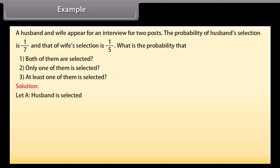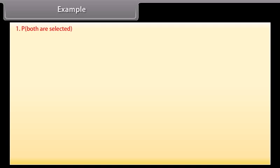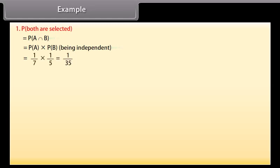Solution: Let event A be husband is selected, so P(A) = 1/7, and event B be wife is selected, so P(B) = 1/5. 1. P(both are selected) = P(A) × P(B) = 1/7 × 1/5 = 1/35.